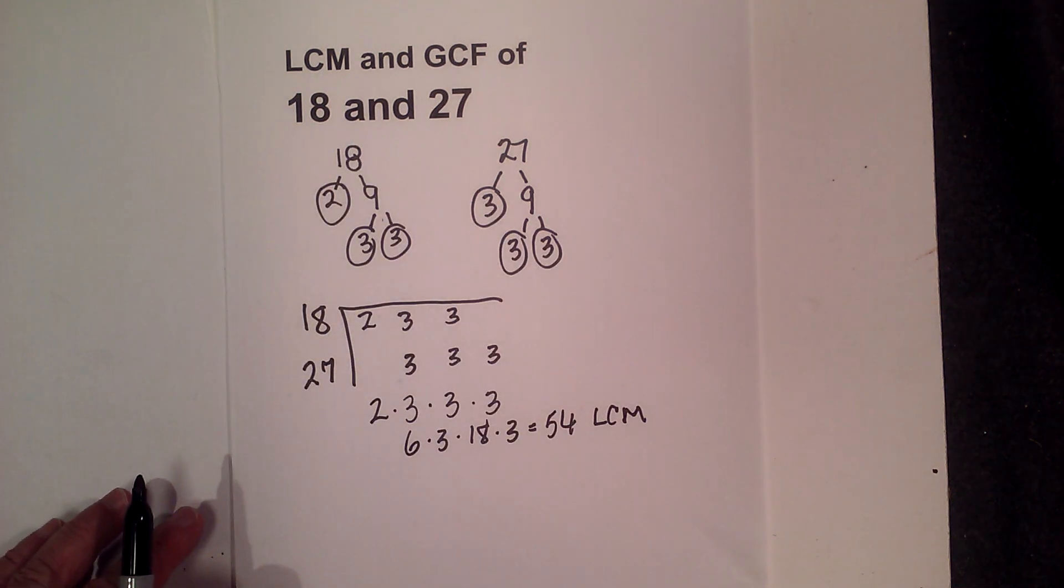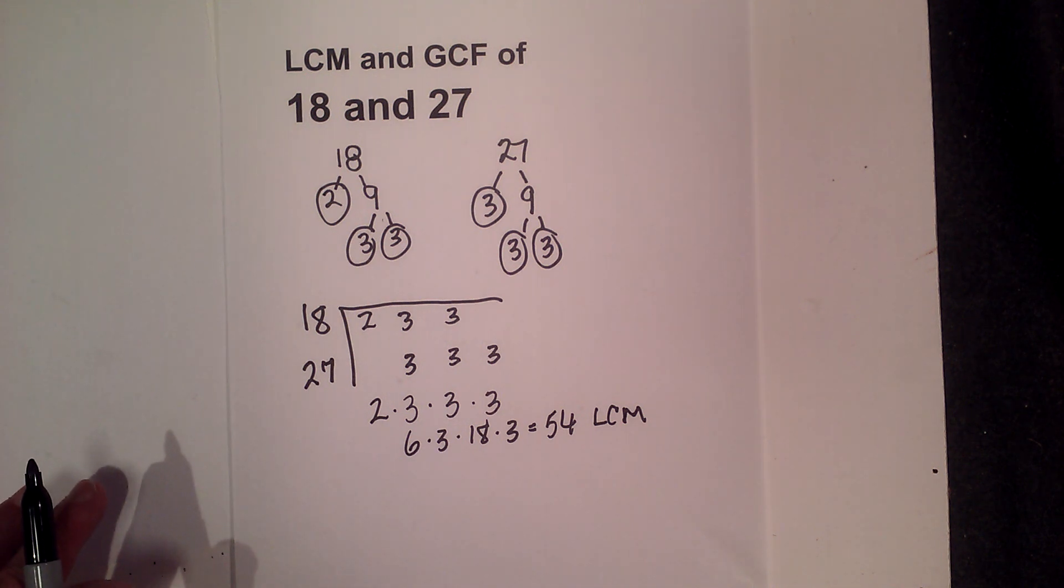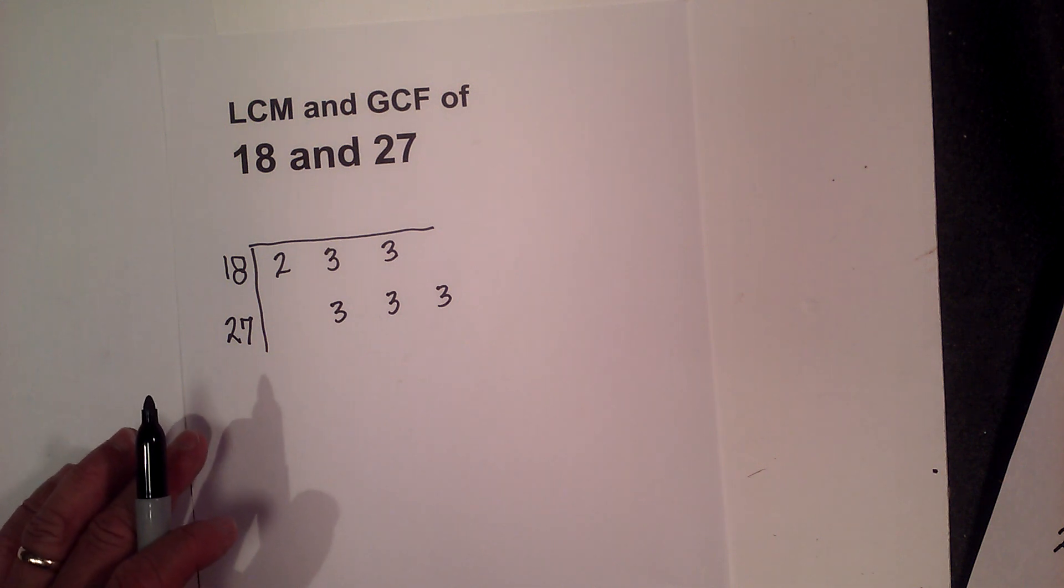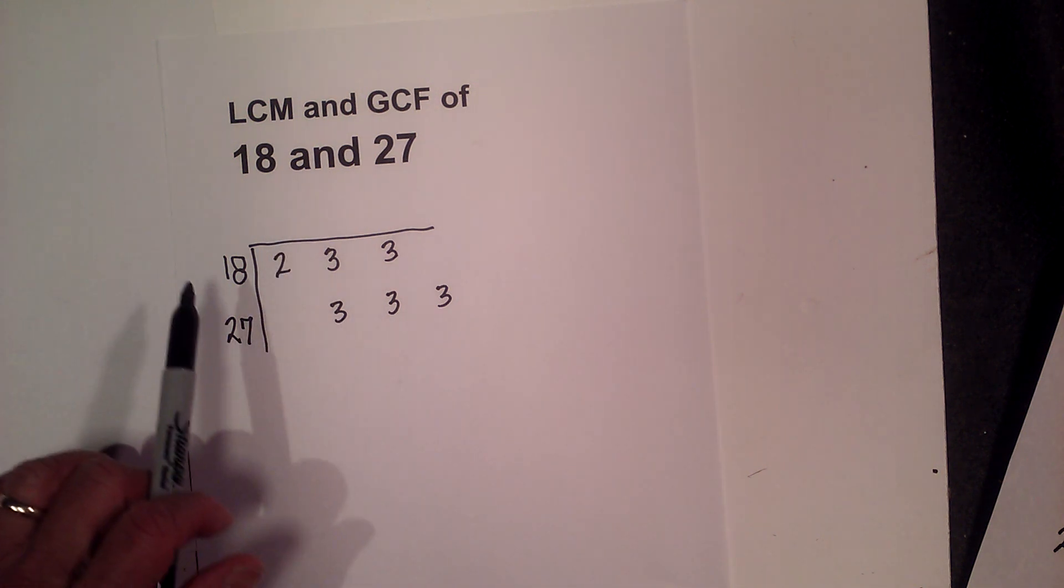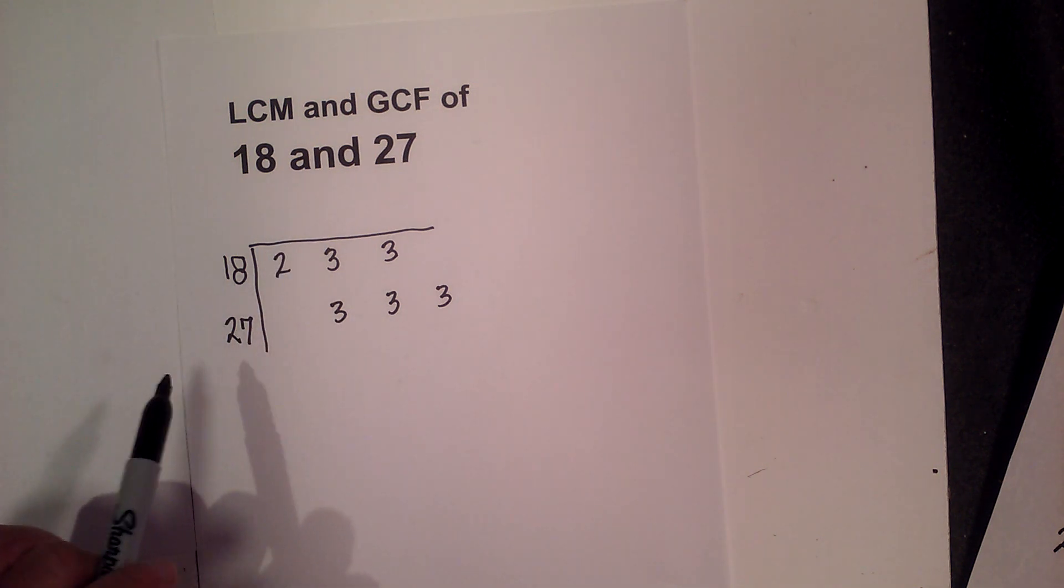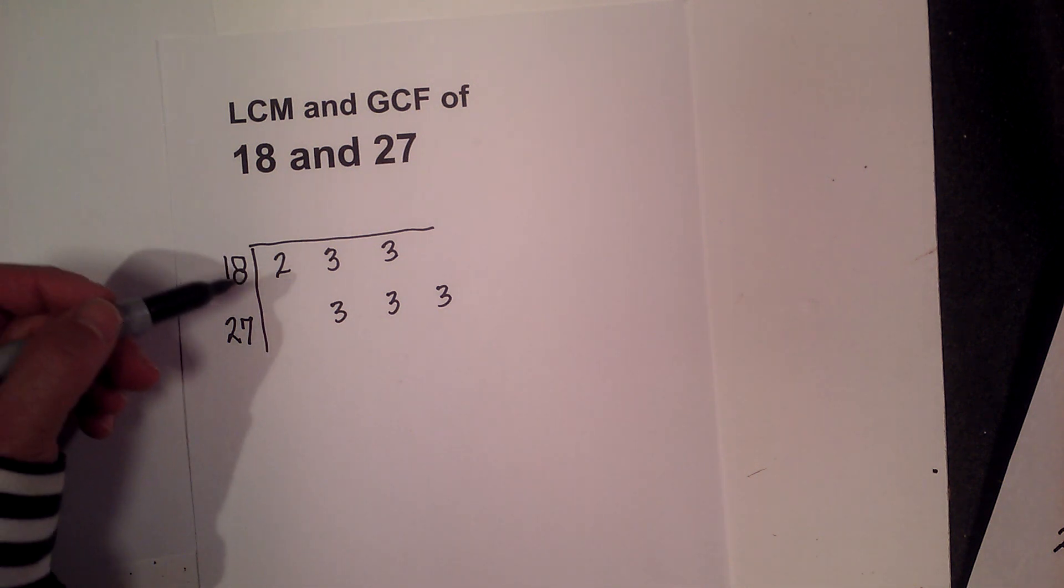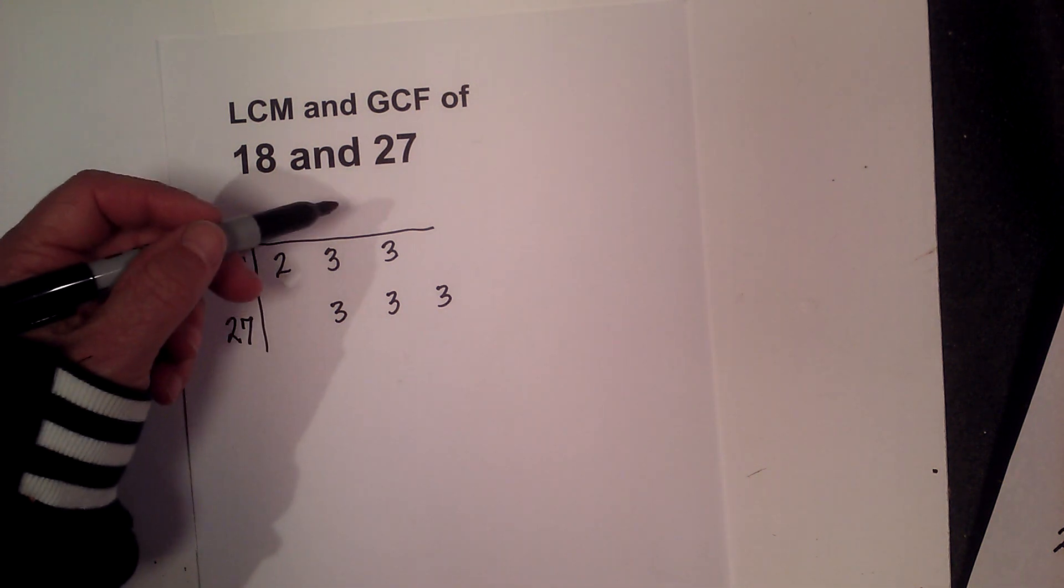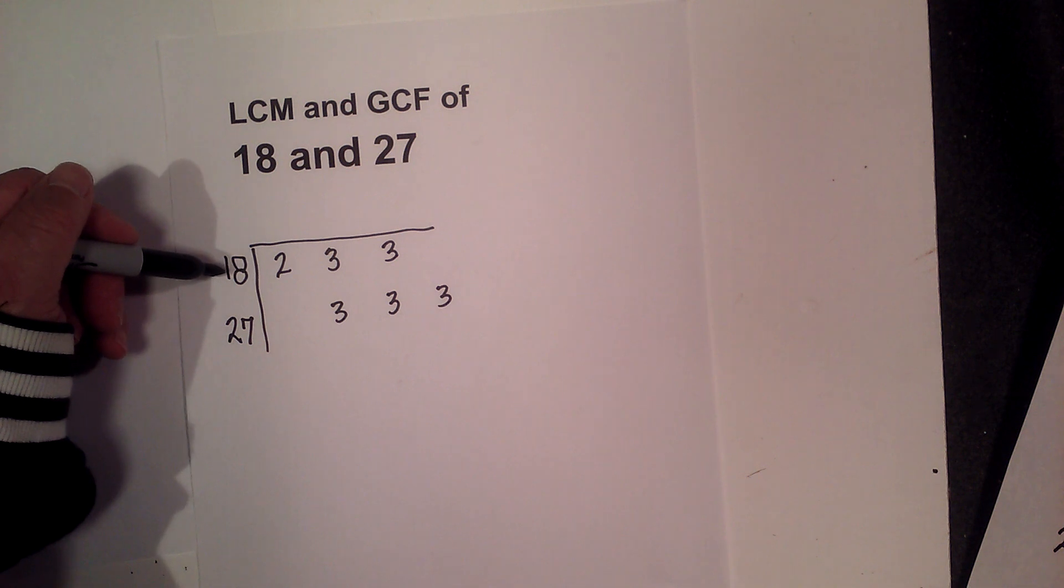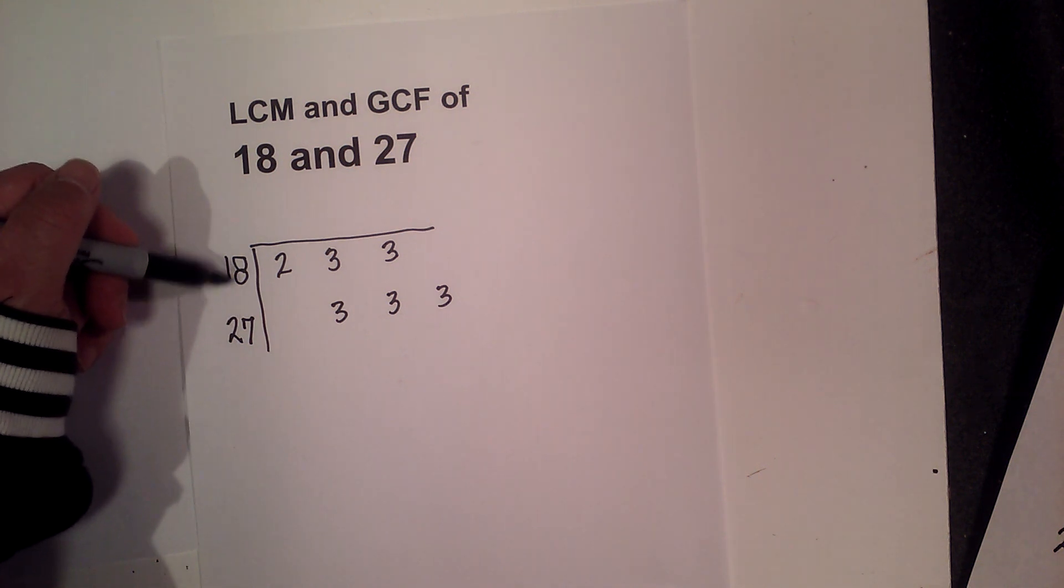Now I can use the very same chart in order to find the greatest common factor. The greatest common factor is the greatest factor that will divide into 18 and 27 evenly. So in order to find that, you look for vertical pairs. Vertical pairs because I have two numbers, a pair of numbers. If I had 3, I'd have to find triplets.